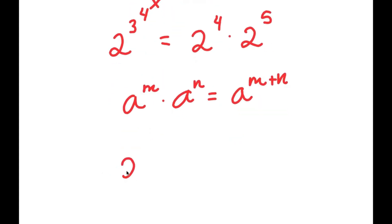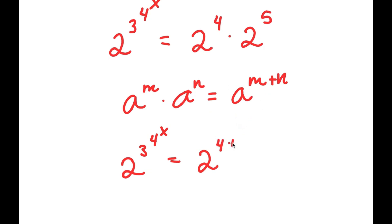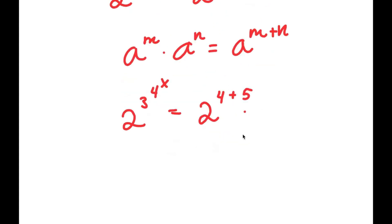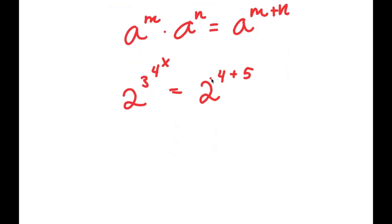So right here we have 2 to the power of 3 to the power of 4 to the power of x is equal to 2 to the power of 4 times 2 to the power of 5, which is the same thing as 2 to the power of 4 plus 5. And 4 plus 5 is equal to 9. So 2 to the power of 3 to the power of 4 to the power of x is equal to 2 to the power of 9.